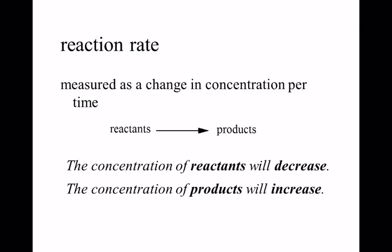In that scenario, your reactants are going to decrease and your products are going to increase. If you ever see me write an R, I mean reactants. If you ever see me write a P, I mean products. Over time, reactants decrease and products increase. One of the things we'll do here is talk about how you can gauge how quickly that occurs — you can watch the molar concentration of the reactants decrease or the molar concentration of the products increase, the rate at which that happens.